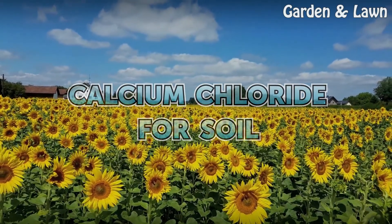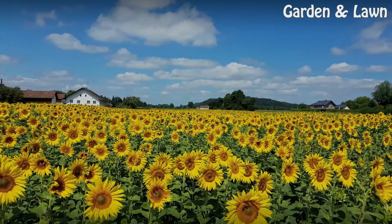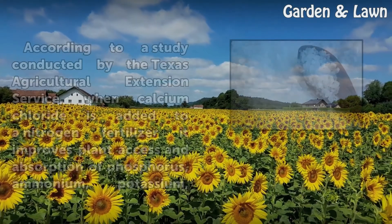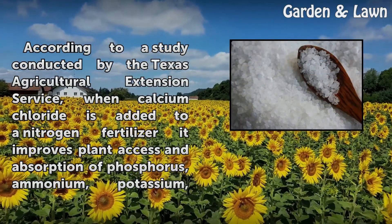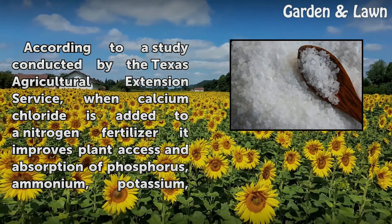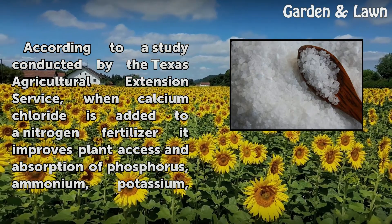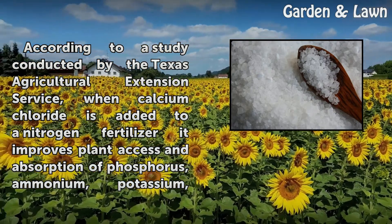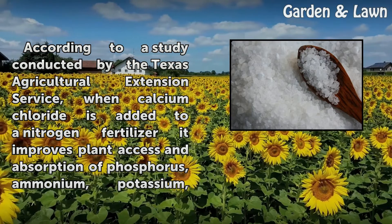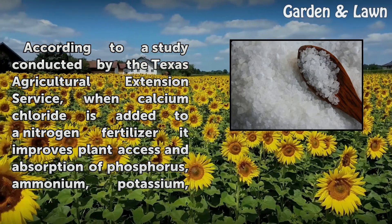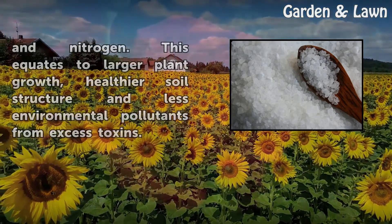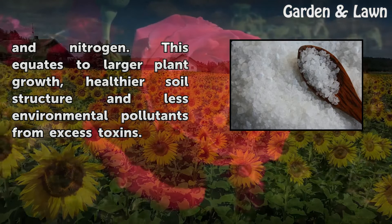Calcium Chloride for Soil. According to a study conducted by the Texas Agricultural Extension Service, when calcium chloride is added to a nitrogen fertilizer it improves plant access and absorption of phosphorus, ammonium, potassium, and nitrogen.